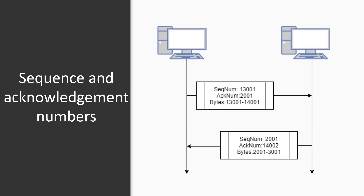Similarly, since the client on the right has received data bytes up to byte number 14000 after the first data transfer from the client on the left, the client on the right sends acknowledgement number 14000 + 1 — that is, the next byte it expects to receive.